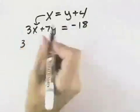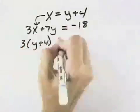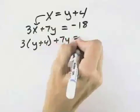So we'd have 3, but instead of x, we'd have y plus 4. And then we leave our 7y and negative 18.